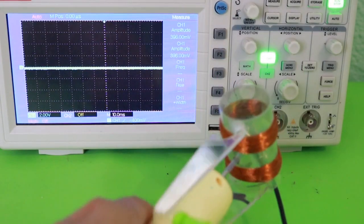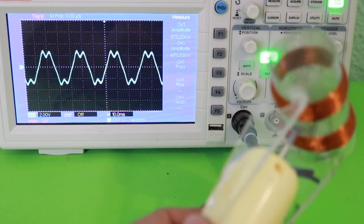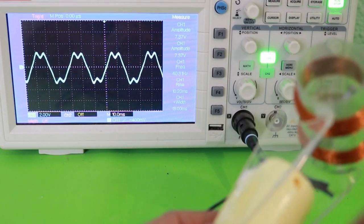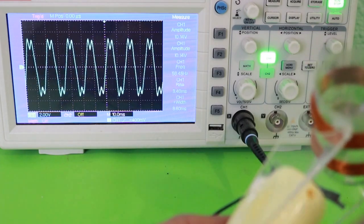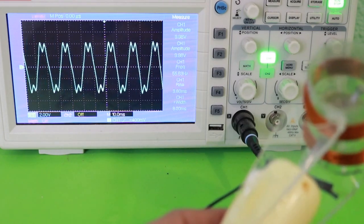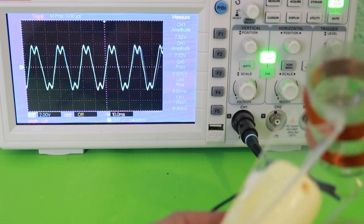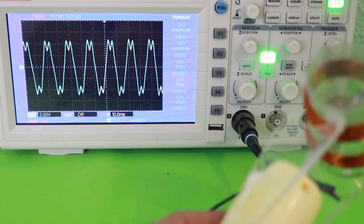Let's see in the oscilloscope. If we increase the speed the frequency also increases. That is because the magnets are rotating faster and the frequency goes up.